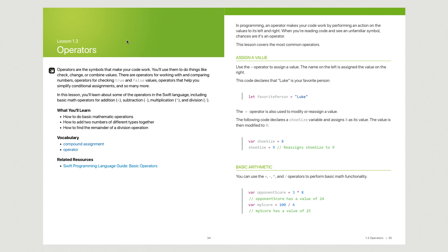For the first part — assigning a value — use the equals operator to assign a value. The name on the left is assigned the value of whatever is on the right. So this code declares that Luke is your favorite person: 'let favoritePerson = Luke.' The equal operator is also used to modify or reassign a value. If you put in 'var' — which stands for variable — it means things can change. Shoe size equals 8, then later shoe size equals 9 — it's going to update that because it is a variable.